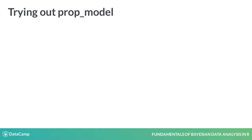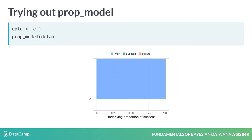Let's start by seeing what happens when we run the model with no data. We get a big blue square. The x-axis in this graph shows different values for the proportion of success and the y-axis shows the probabilities of the different values. The blue square is a uniform probability distribution saying that any proportion of success has equal probability. It's labeled prior because one assumption of the model was that prior to seeing any data, any underlying proportion of success was equally likely.